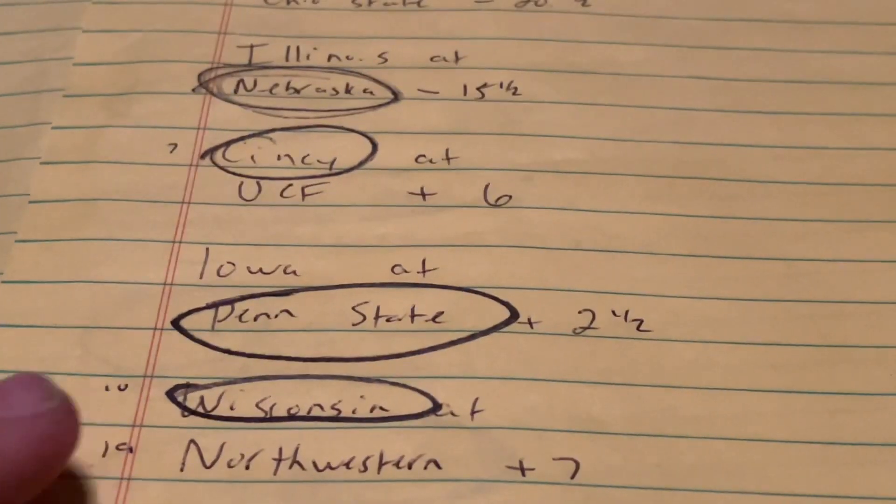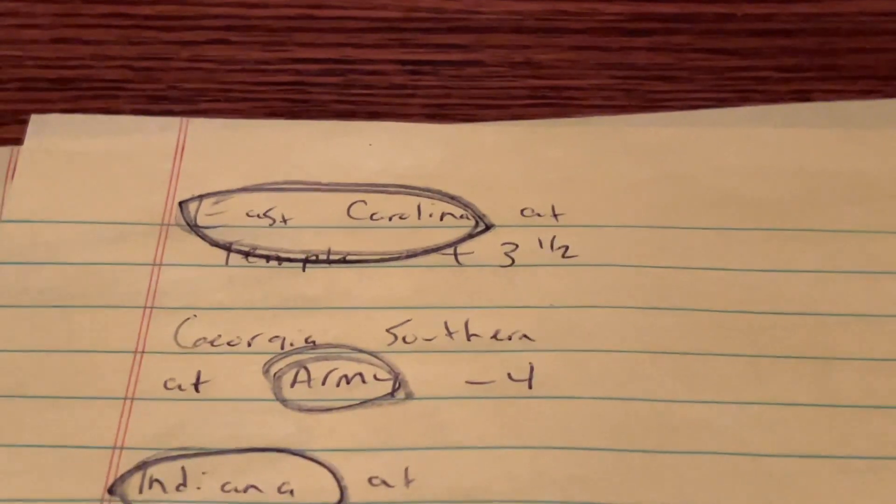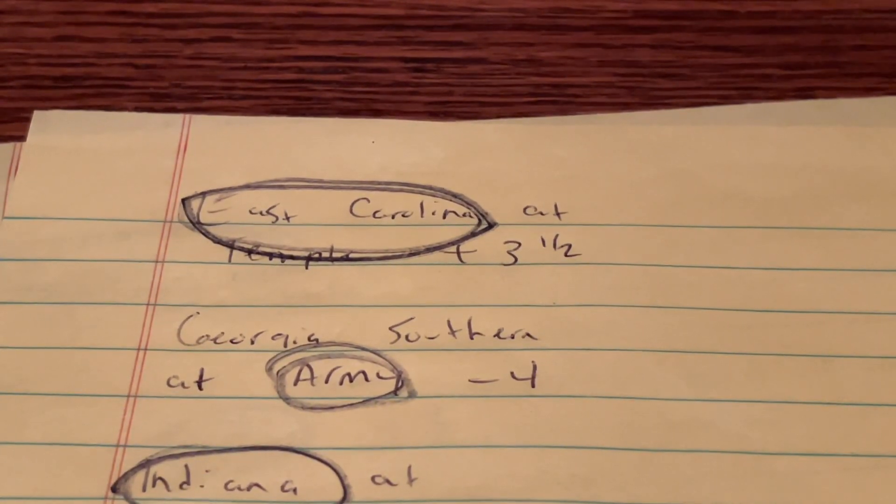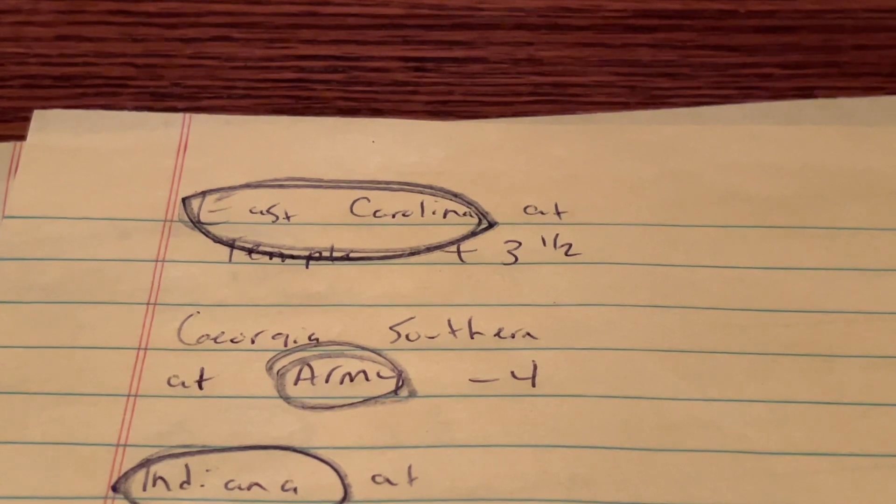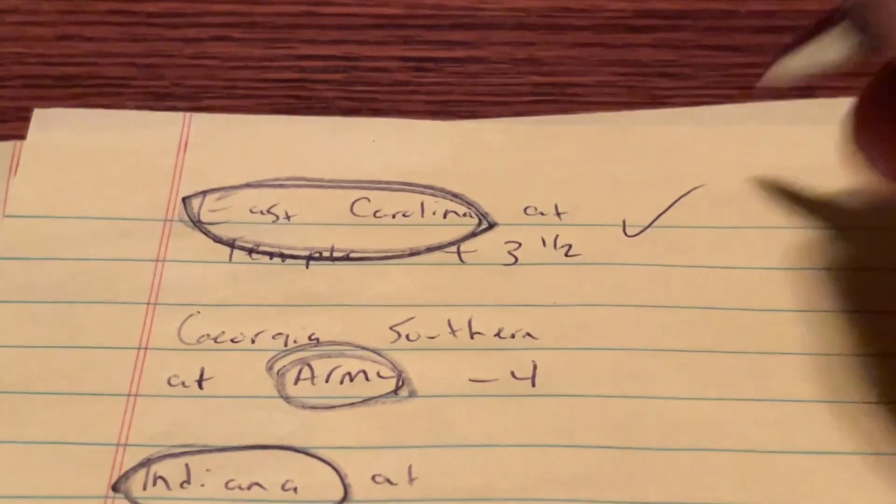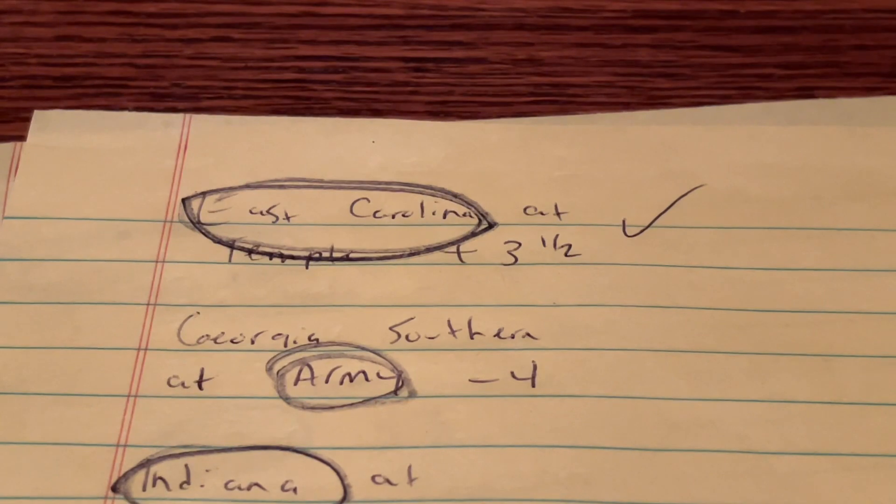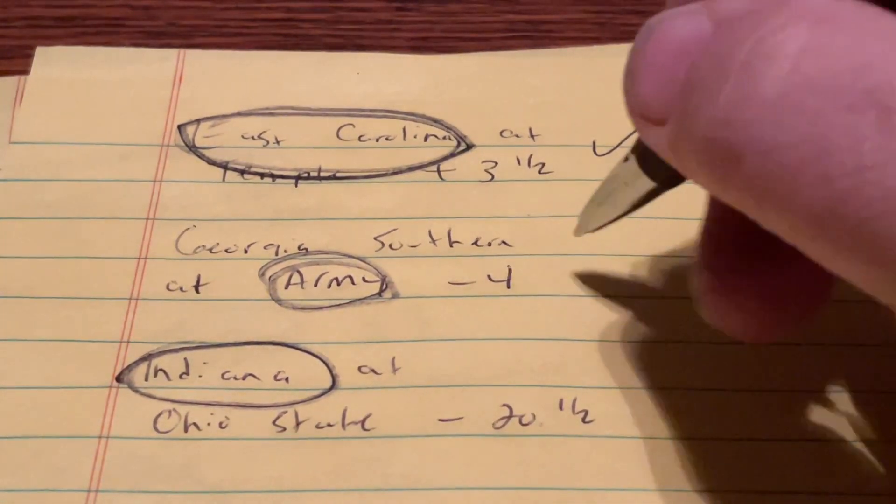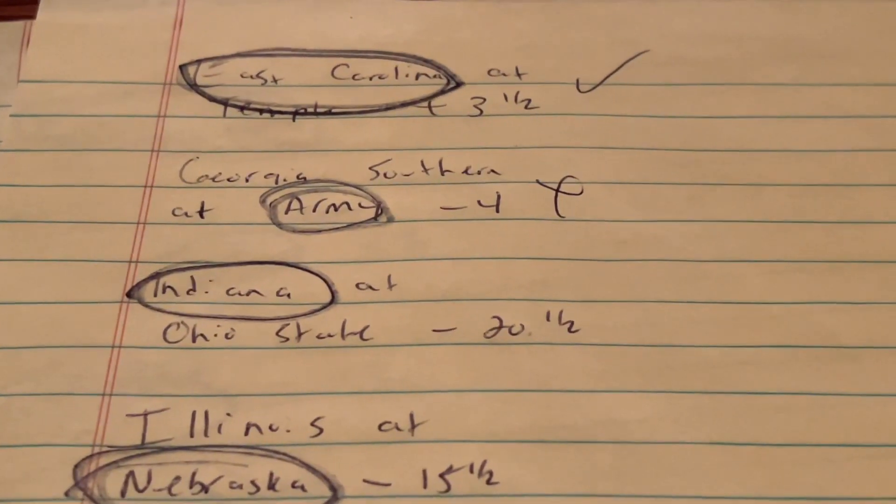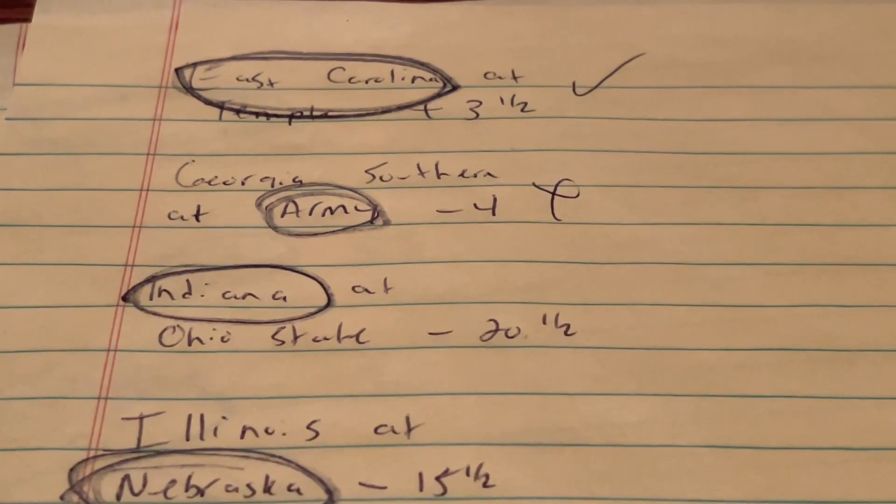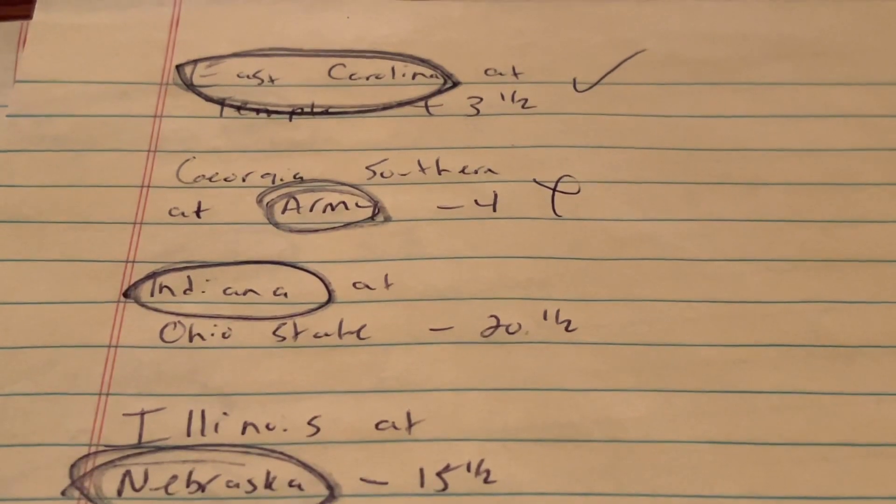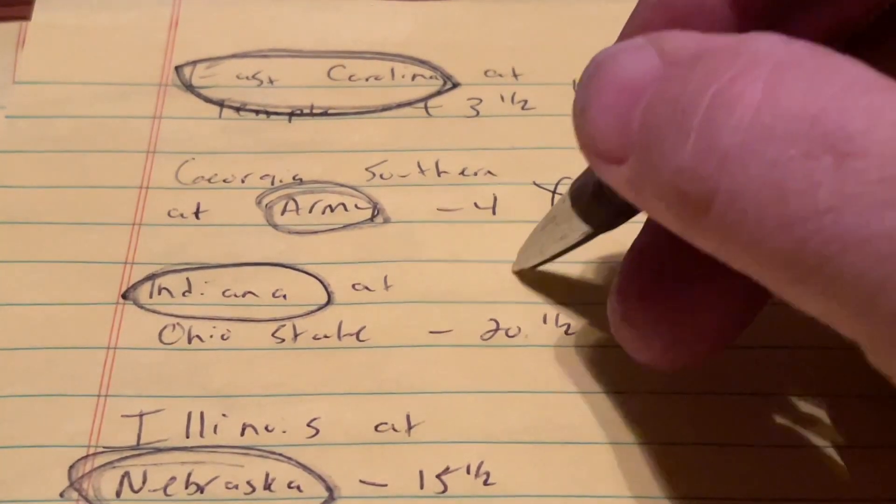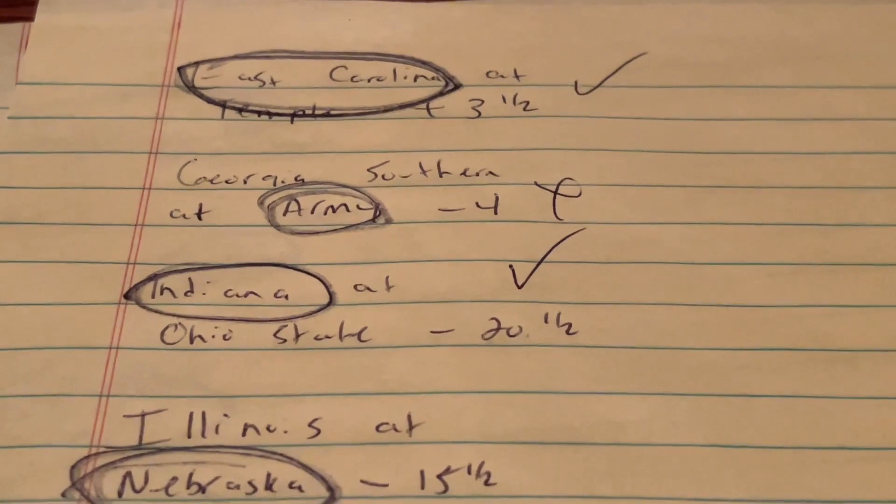Moving along to page number two, East Carolina and Temple. Temple was catching three and a half at home, and I had picked East Carolina to cover that spread, and they did. They won 28-3. Georgia Southern and Army. Army wins, but only 28-27. So that one was incorrect. Indiana and Ohio State, 20-and-a-half points Ohio State was laying at home, and they do win 42-35. So that pick is correct. Indiana did cover.